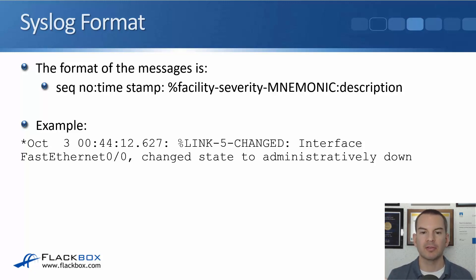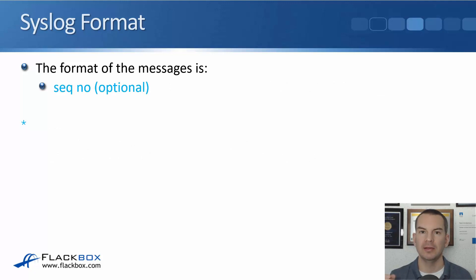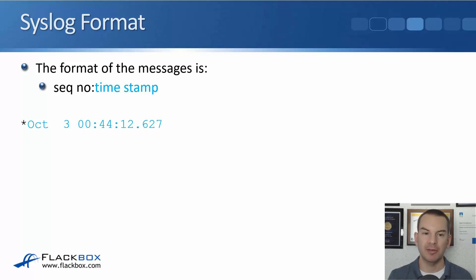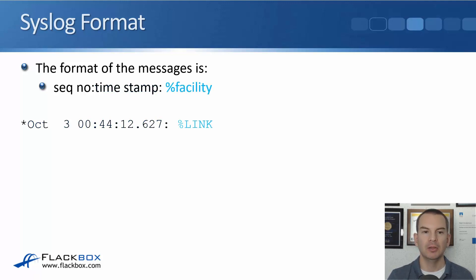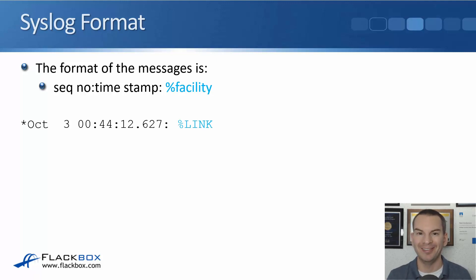There are quite a few parameters in a Syslog message so let's go through them one by one. The first thing is an optional sequence number — in our example we don't have one set. The next thing is a timestamp; you can see from our example that this event happened on October the 3rd at about 1am. The next thing listed is the facility, which is the thing that generated the event. In our example it's a change of state on a link, so the facility here is the link. If it had been an OSPF adjacency coming up or going down then the facility would have been OSPF.